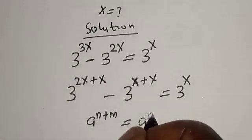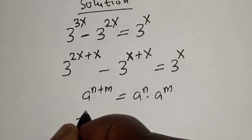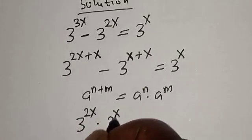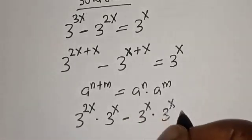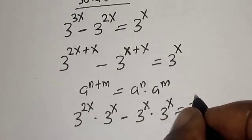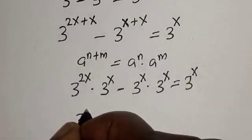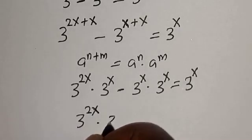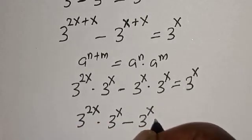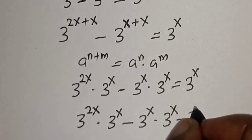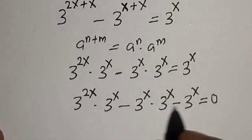So we have 3 raised to power 2x multiplied by 3 raised to power x, minus 3 raised to power x multiplied by 3 raised to power x, is equal to 3 raised to power x. Let's bring everything to one side: 3 raised to power 2x multiplied by 3 raised to power x minus 3 raised to power x minus 3 raised to power x is equal to zero.